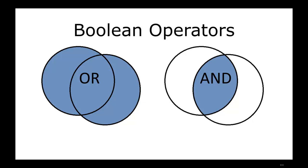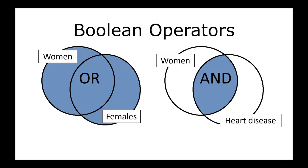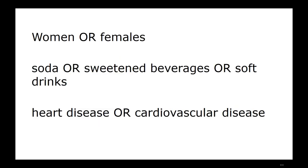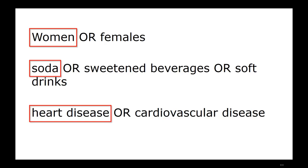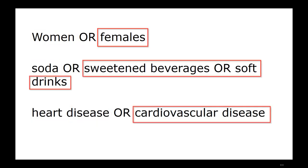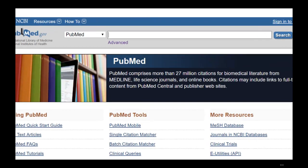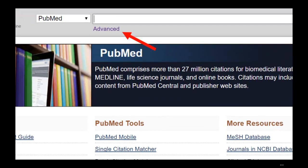Use OR between synonyms or related words, and use AND to combine together the main parts of your search. Let's review our list of topics and keywords. We determined the main topics that need to be included in our search results and found alternate ways of describing the topics. When we go into a database like PubMed, we can use the Advanced Search Builder to craft our search.